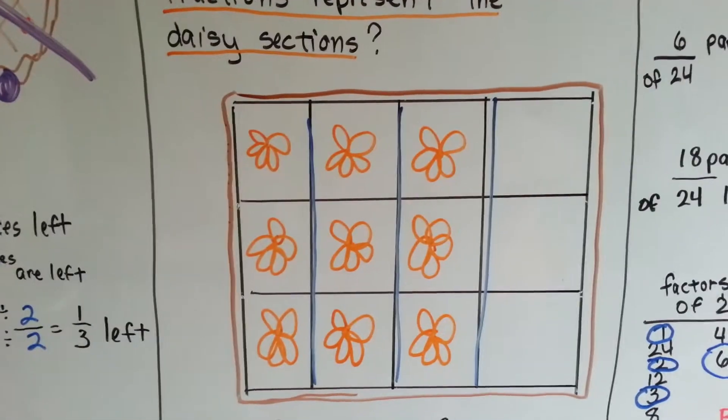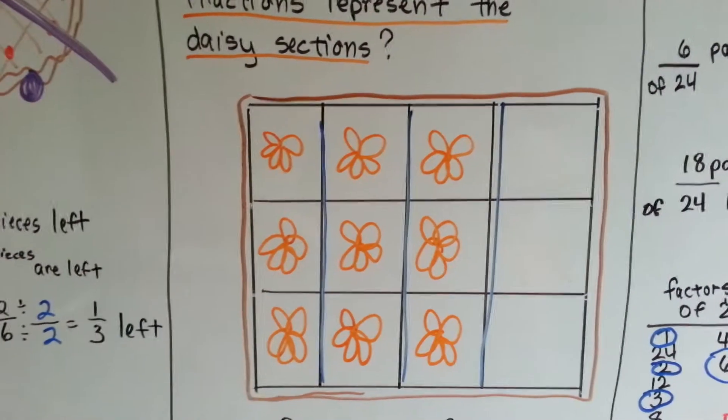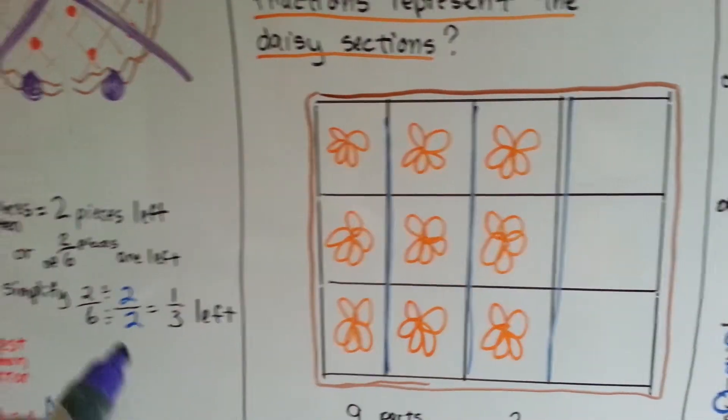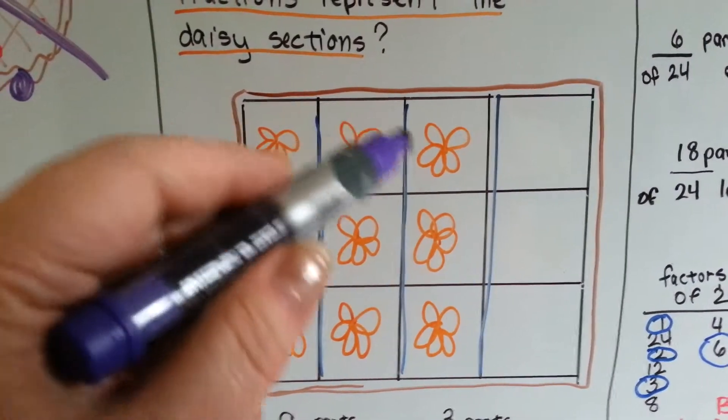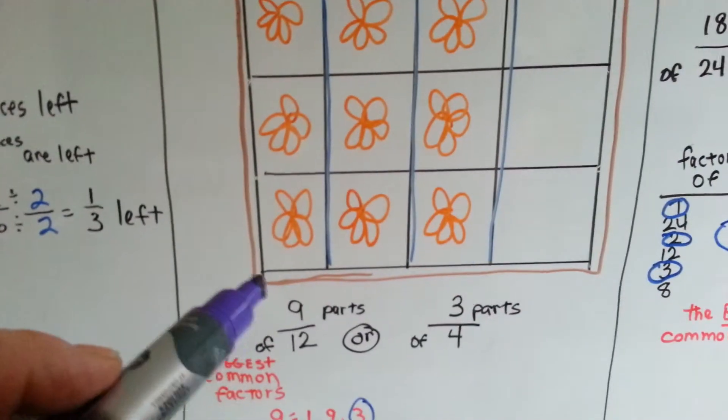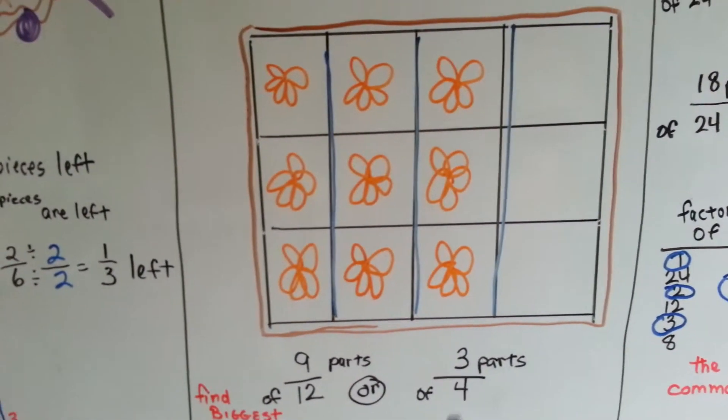We've got nine of them filled with daisies. What's the fraction? How many parts are there? How many parts do we have of how many parts? We said two pieces of six. Do we have nine parts of twelve are daisy? Yeah. Nine parts of twelve are daisies.